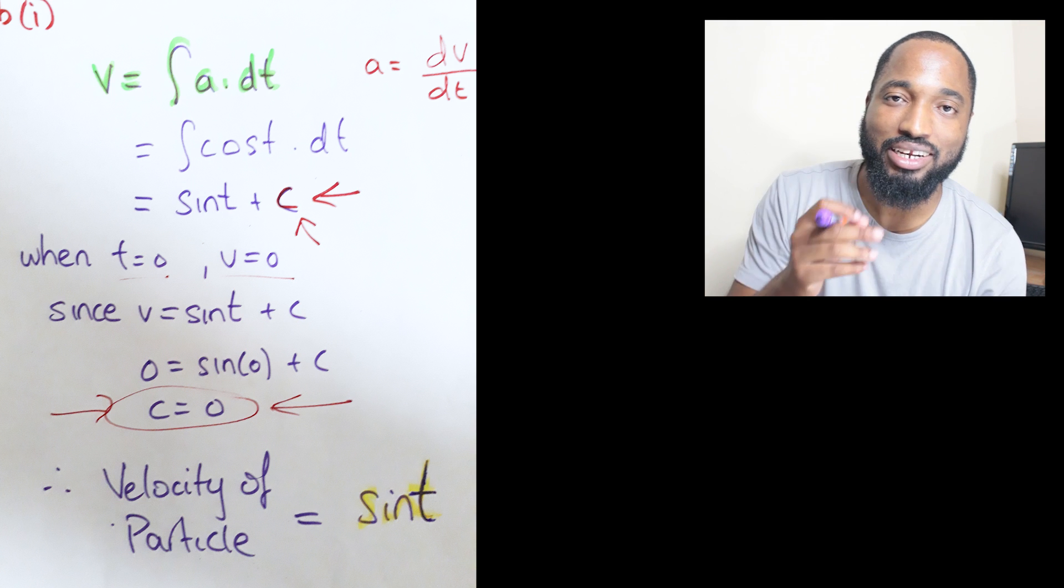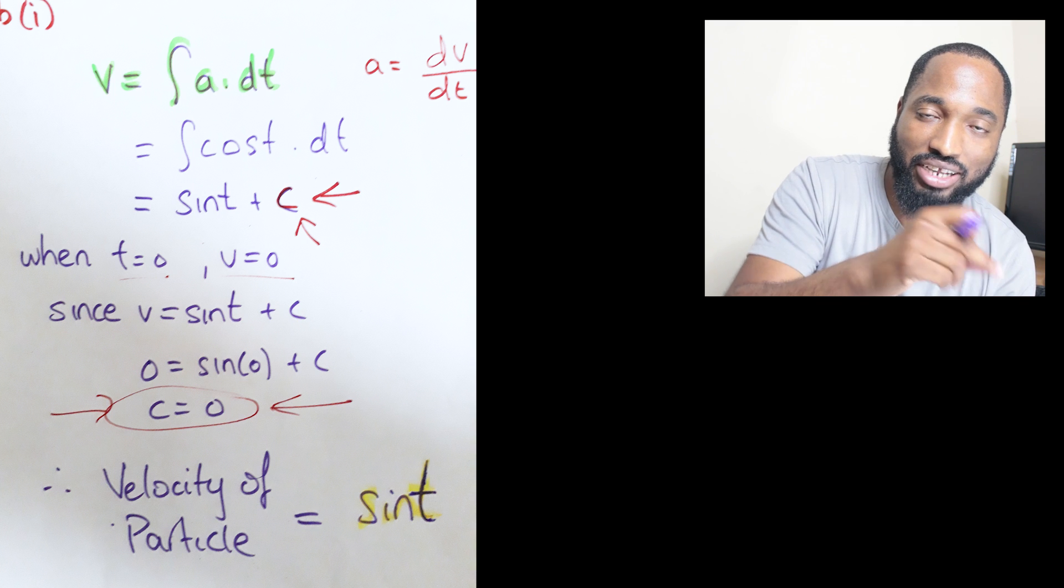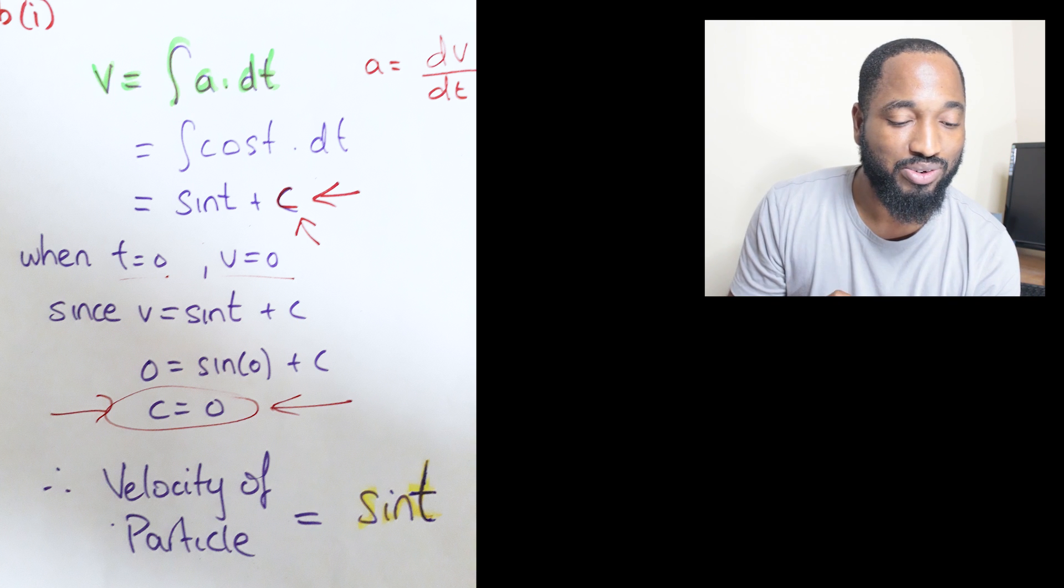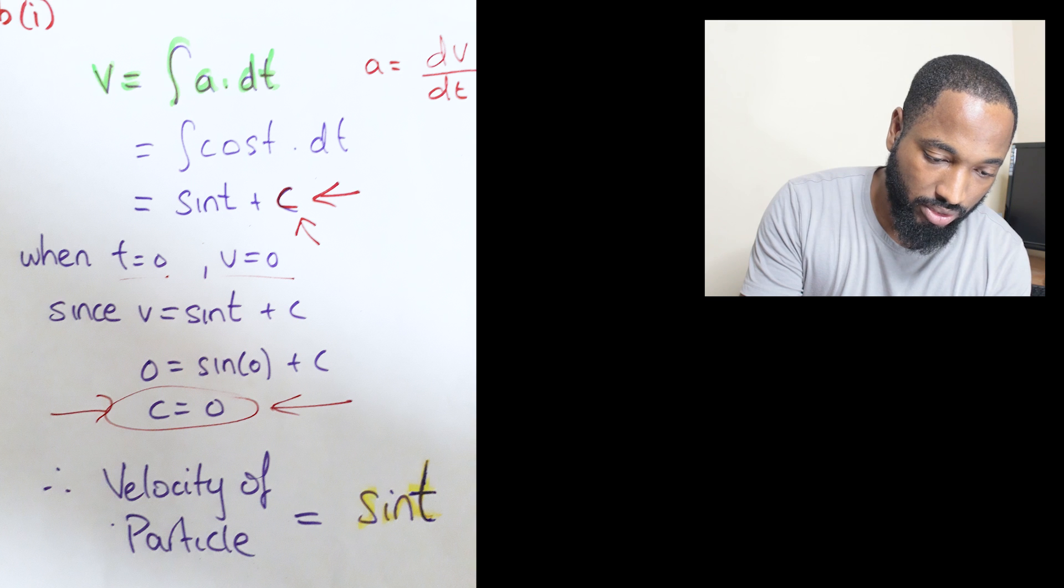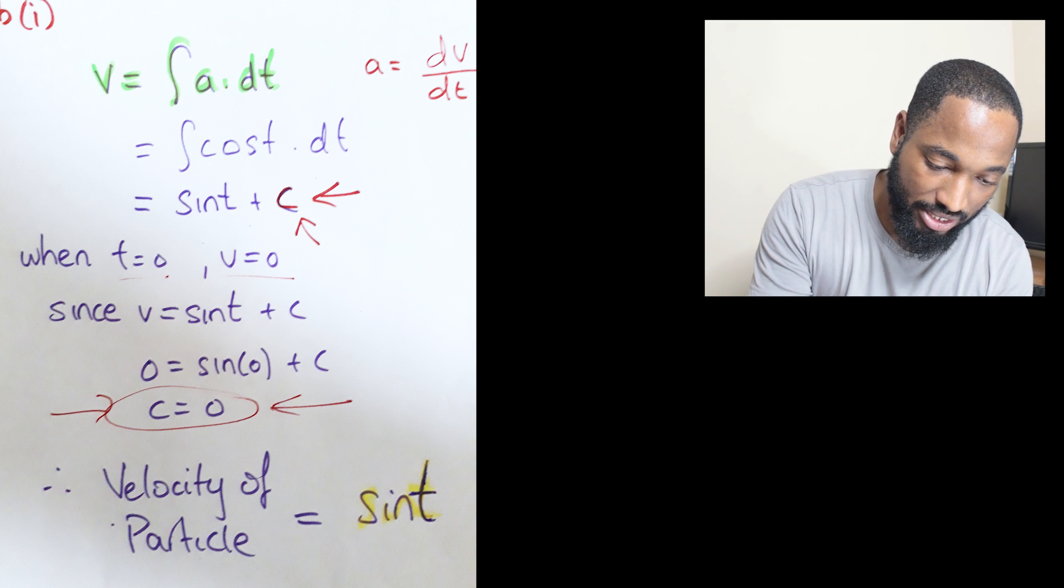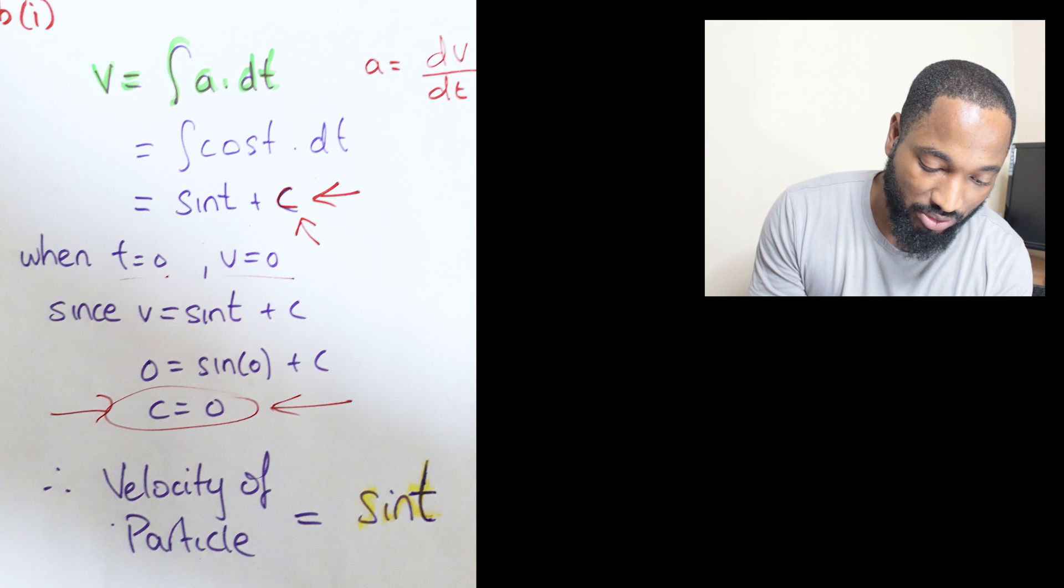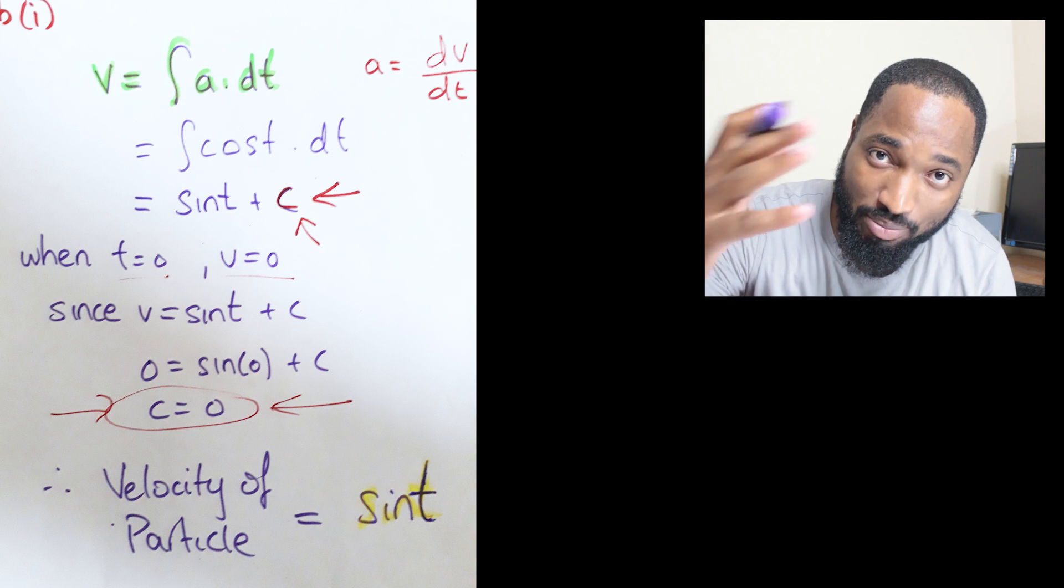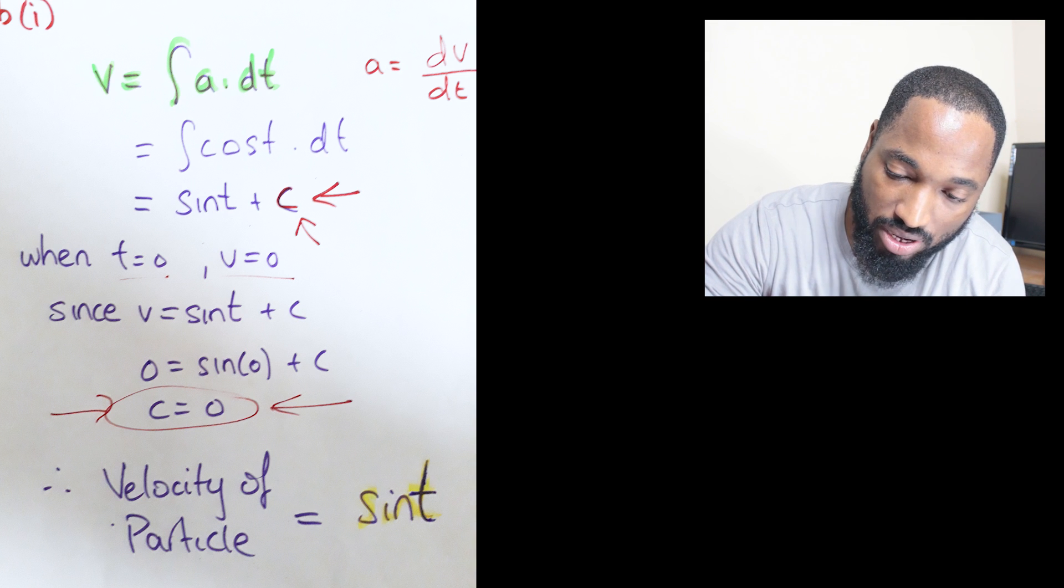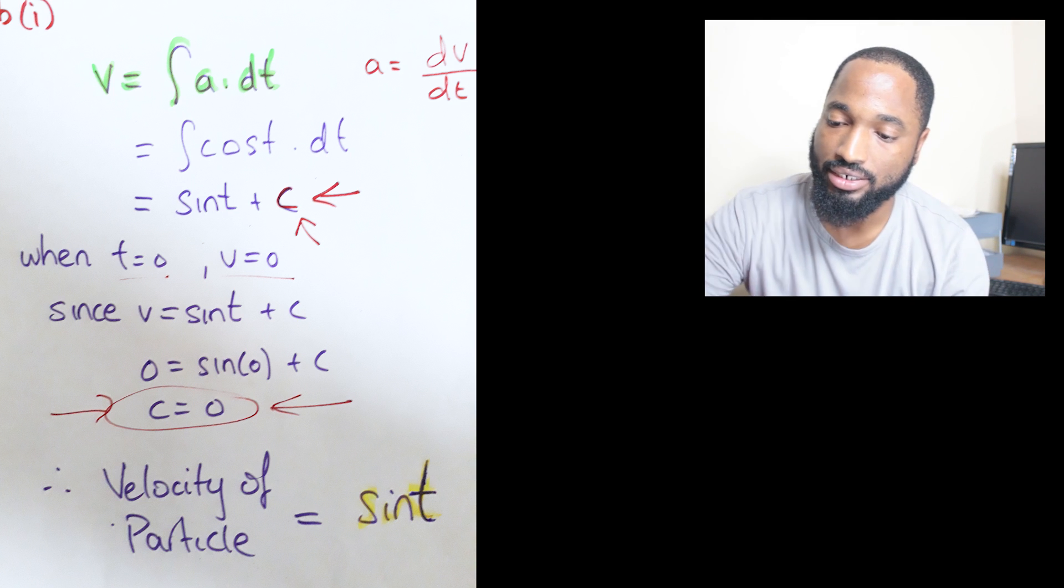We need to get rid of that constant. The particle starts at rest, so when time is zero, velocity was zero. Remember v equals sin t plus C, so zero equals sin(0) plus C. This gives C equals zero. Now we can state that the velocity of the particle in terms of t is v equals sin t. That's the answer - three marks.